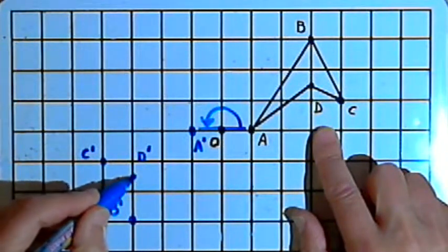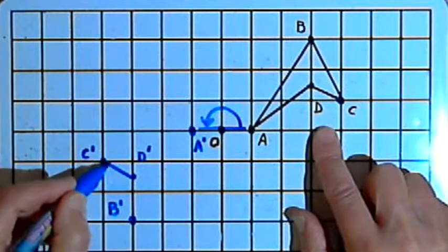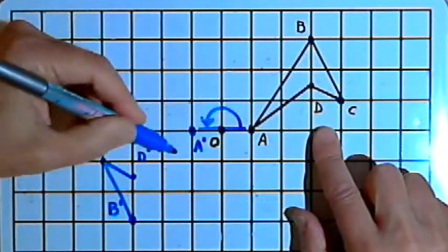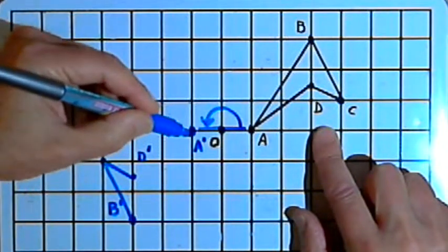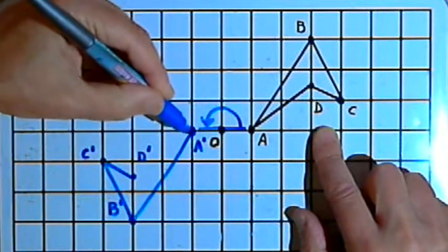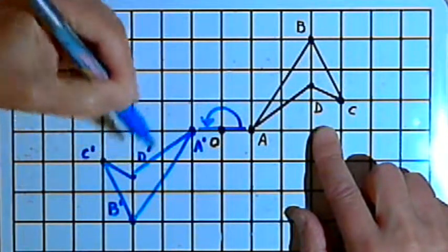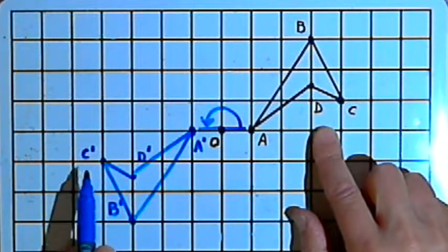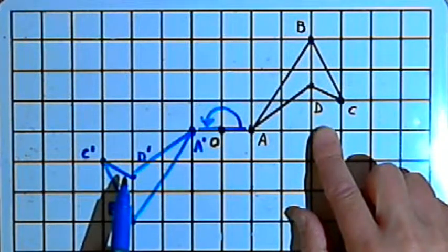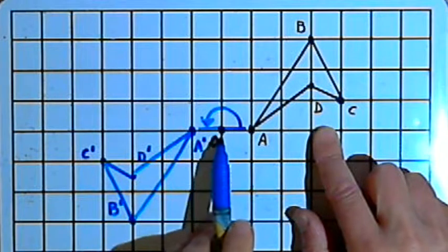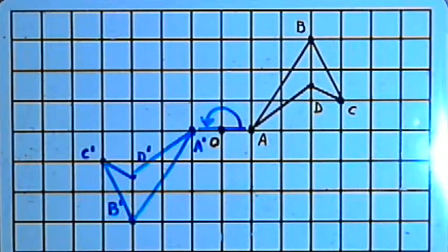Now if I connect those four points, I should have my rotated image. There's my new quadrilateral — A prime, B prime, C prime, D prime — rotated 180 degrees through the center of rotation, point O.